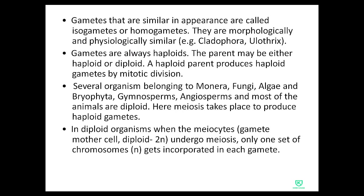Gametes that are similar in appearance are called isogametes or homogametes. They are morphologically and physiologically similar to one another. An example of organisms showing isogametes is Cladophora and Ulothrix.